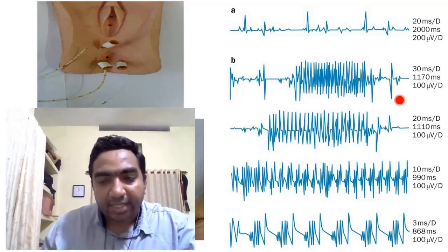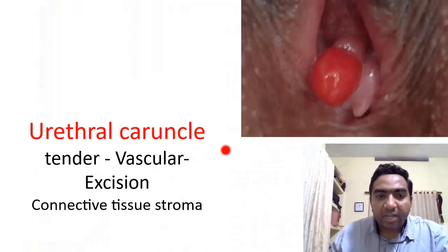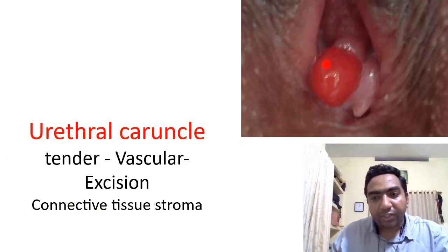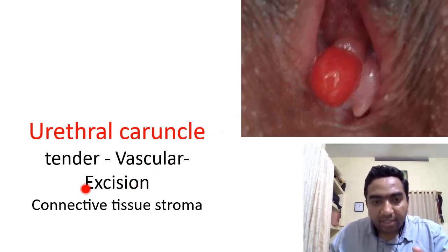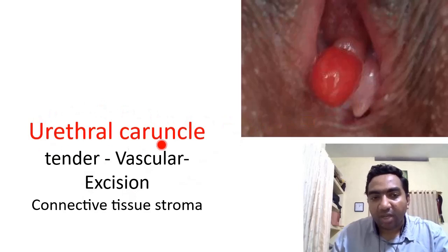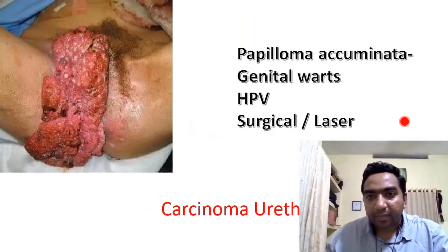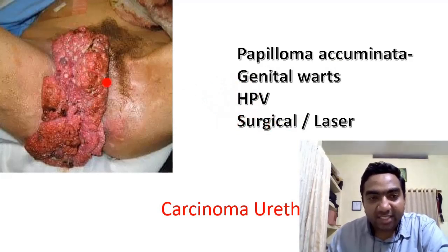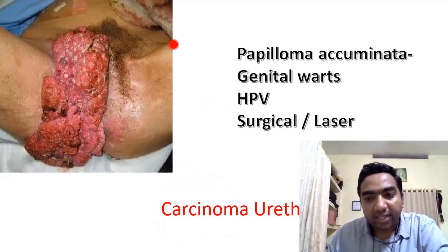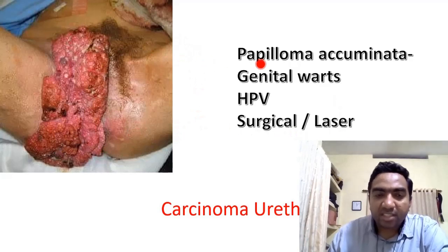Urethral caruncle is a problem with connective tissue; it initially looks like urethral prolapse but is more tender and vascular — urethral prolapse is not vascular or tender. Urethral caruncle requires excision. Genital urinary warts, called condyloma acuminata, are associated with human papillomavirus (HPV) — surgery or laser is the treatment. Genital warts and carcinoma of the urethra can both present similarly, so tumors and neoplasms must be considered.